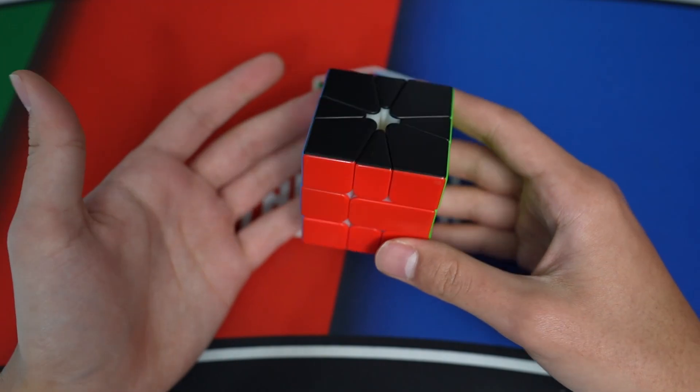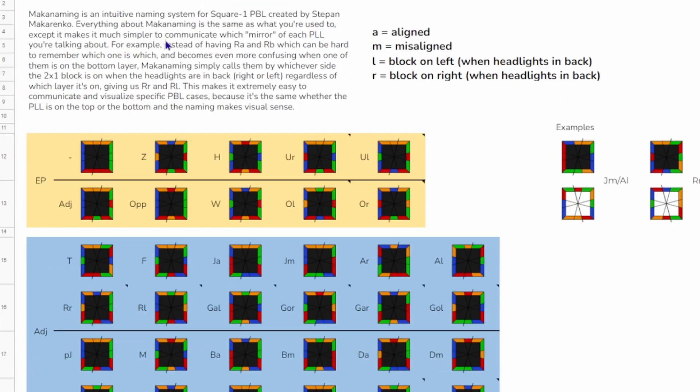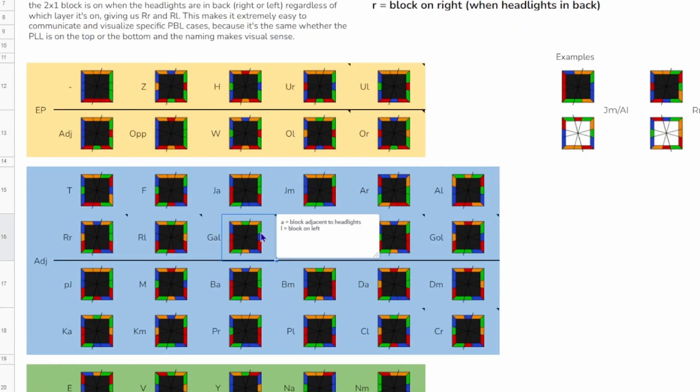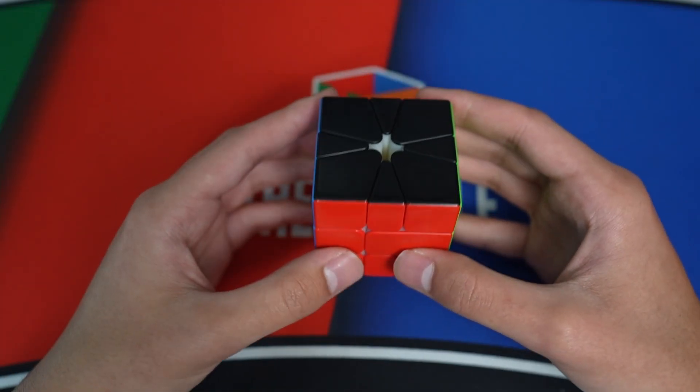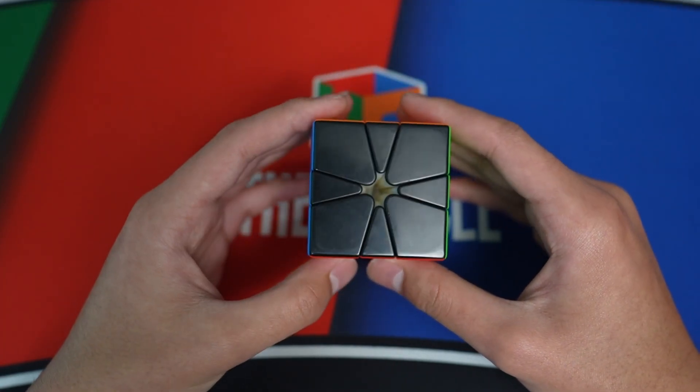So I hope you like Maka naming, and I hope you find it useful and maybe switch to it. It's pretty simple, and if you want a document that has all of this laid out so you can see it at once, then I have linked a sheet in the description. But I hope you found this useful, and let me know what you think, and thanks for watching.